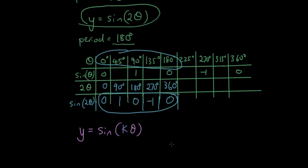So what that means is you are multiplying the input by a factor of K. You are multiplying the input theta by a factor of K, and then putting the input into the sine function to get the output. So the period is going to be 360 degrees, which is the original period, divided by K.